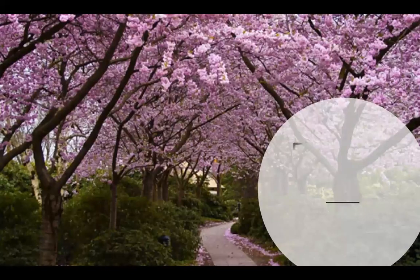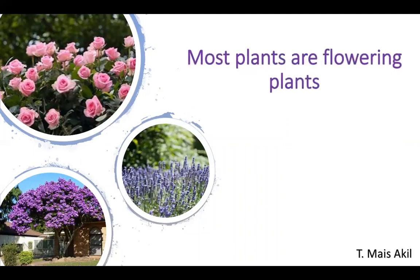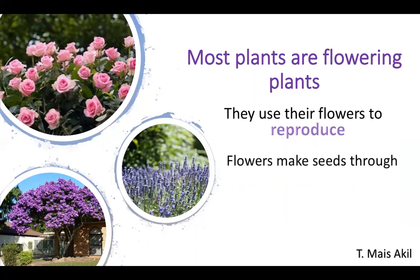Let's talk first about the flowering plants. Here we have different kinds of plants that have flowers. Most plants are flowering plants, so there are more flowering plants than conifer plants. They use their flowers to reproduce, and the flowers make seeds through pollination. An example of a flowering plant is the cherry tree.